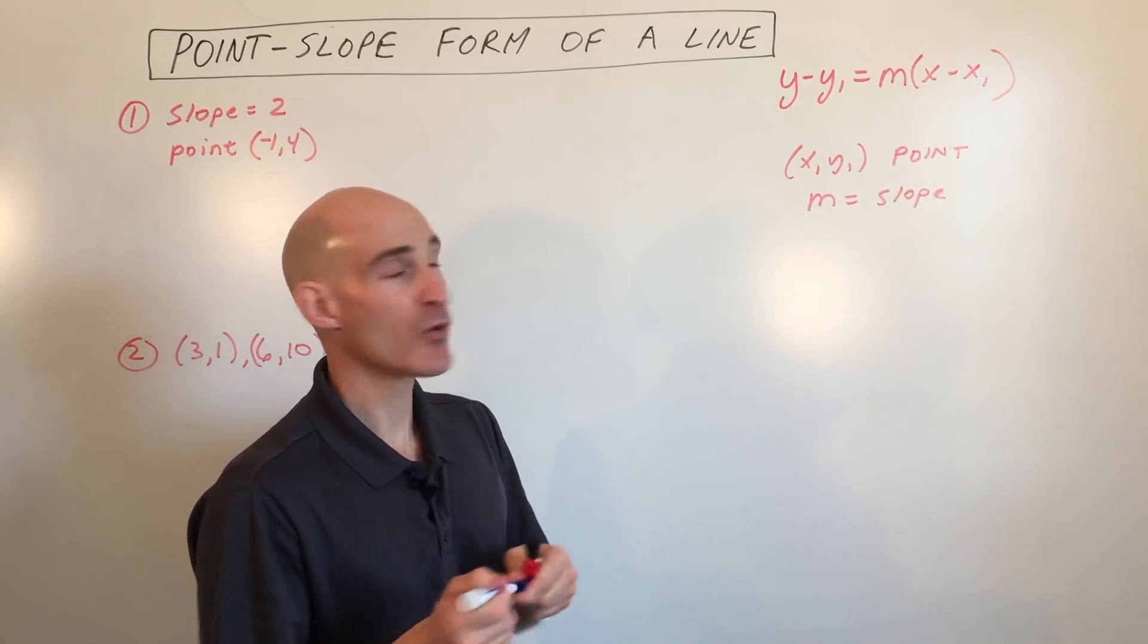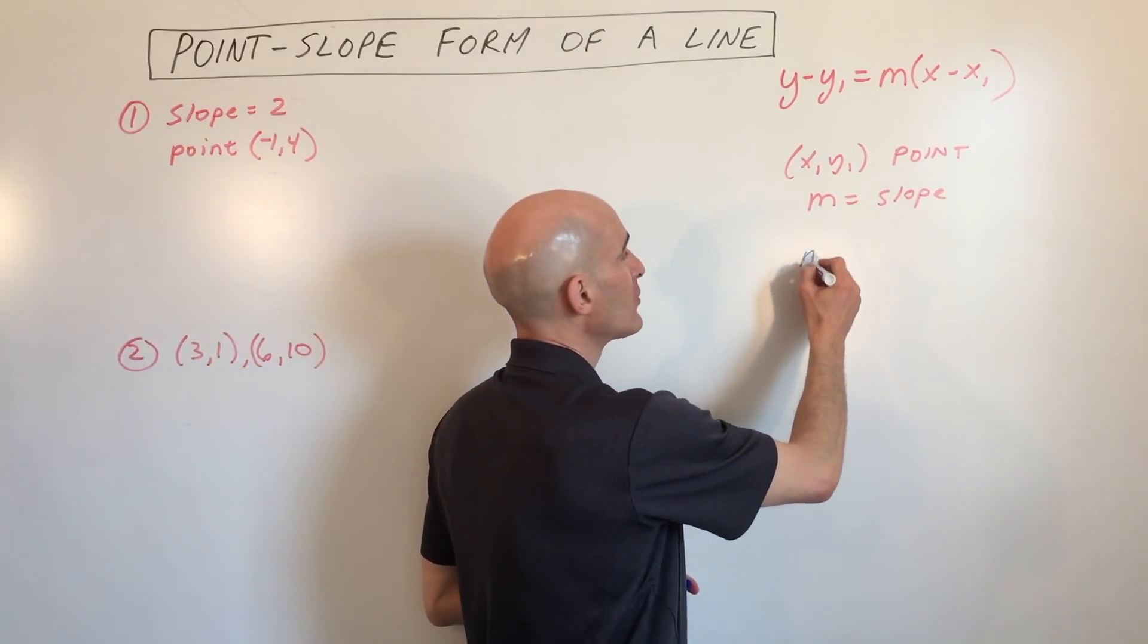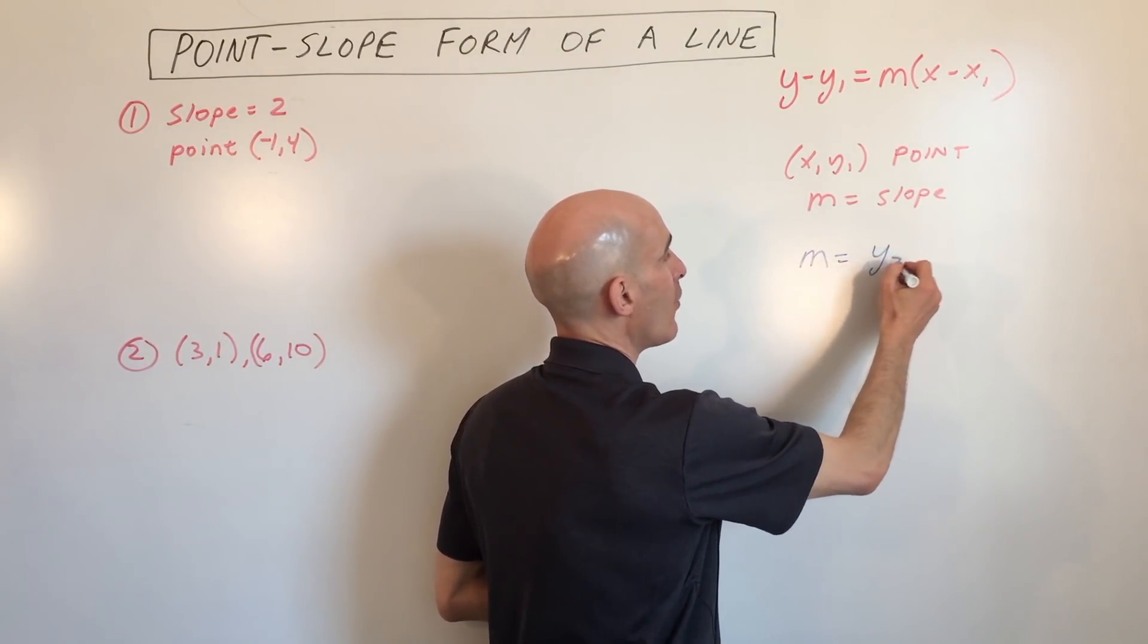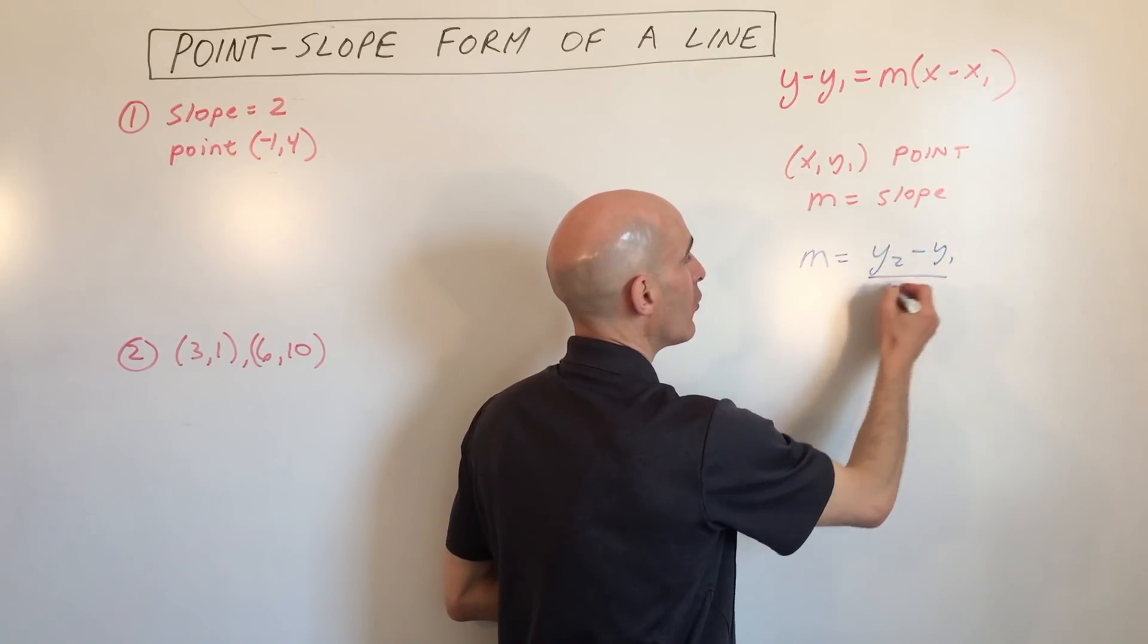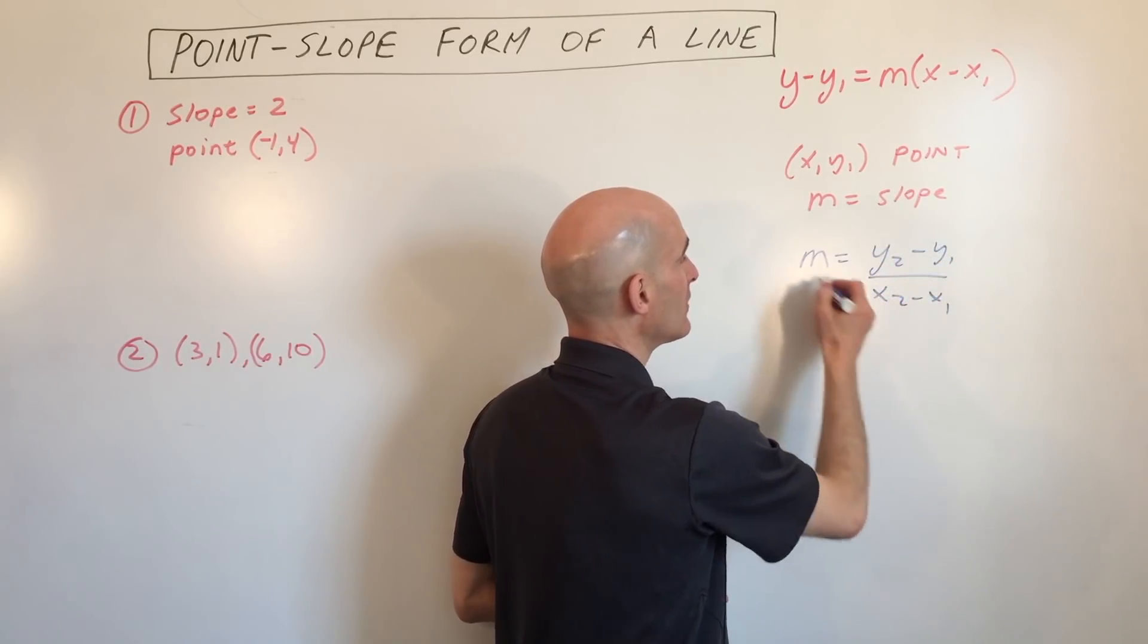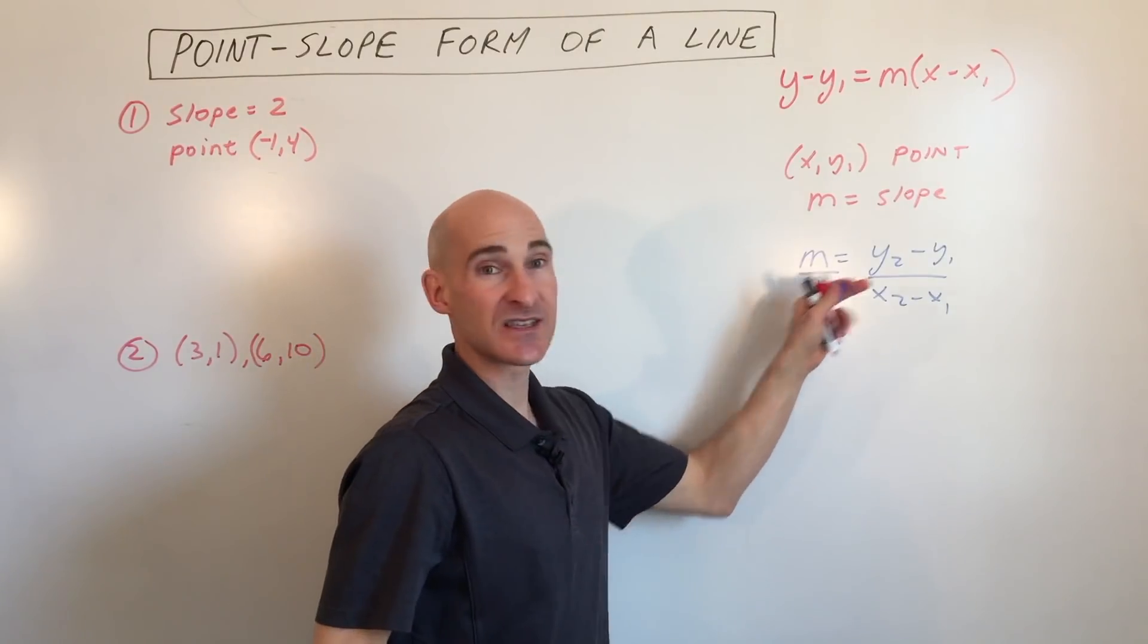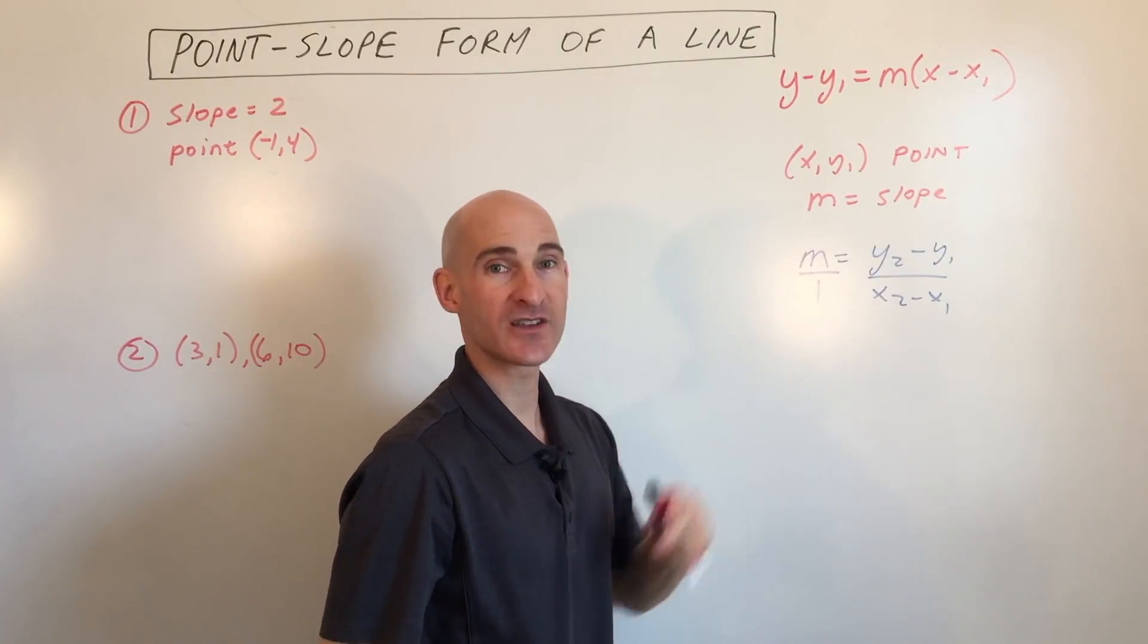A little background on where this formula comes from: we know that the slope formula equals y2 minus y1 over x2 minus x1. Anything divided by one is itself. If we cross-multiply across the equal sign...